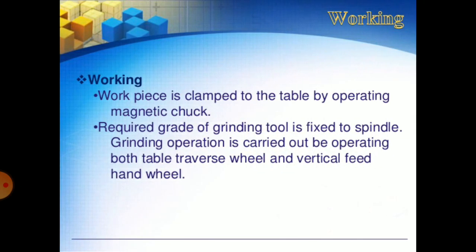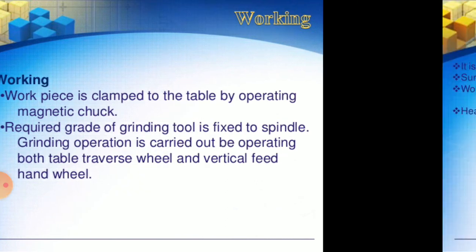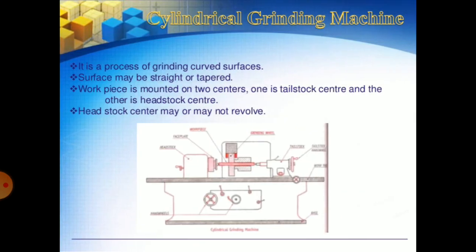The working of the surface grinding machine: the work piece is clamped to the table by operating the magnetic chuck. The required grade of grinding tool is fixed to the spindle. The grinding operation is carried out by operating both the table traverse wheel and vertical feed hand wheel.